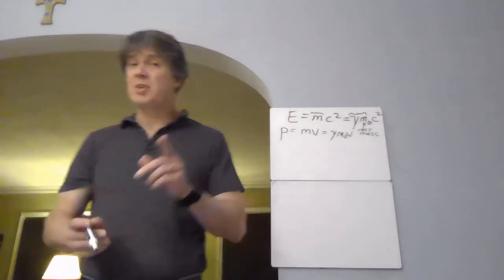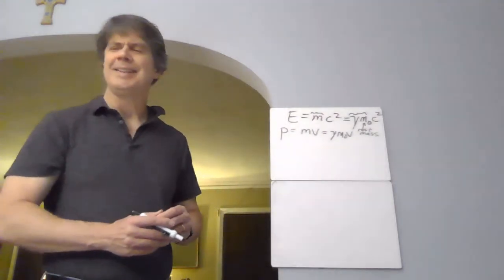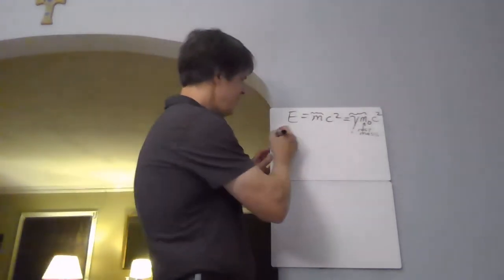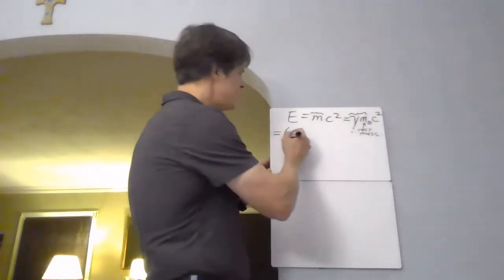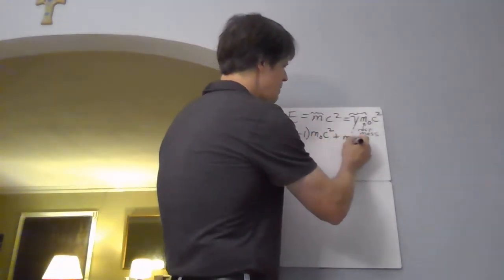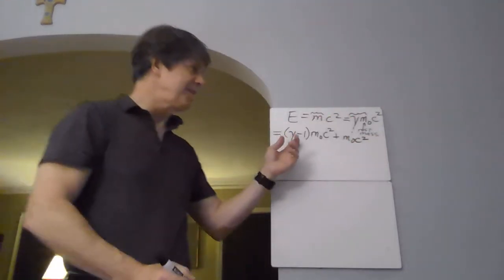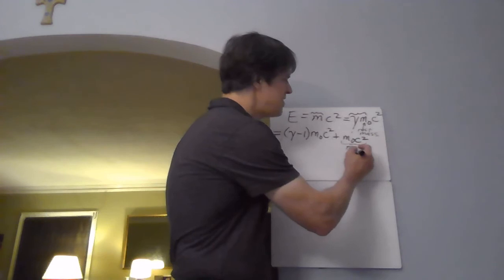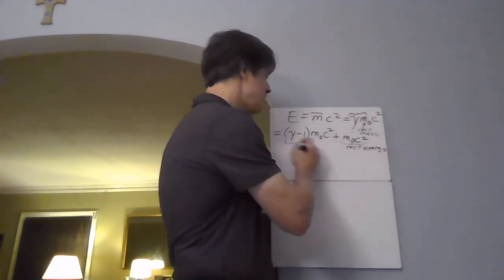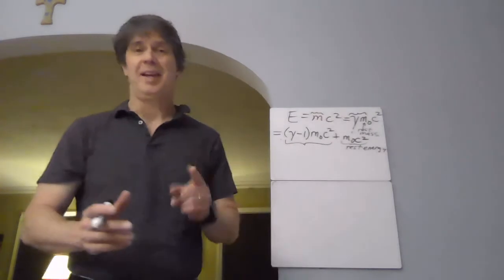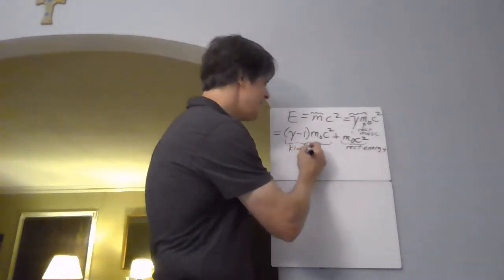When I get back to the energy thing, here's something interesting. You can write the total energy as gamma minus one times M-naught c squared, plus M-naught c squared. I've just weirdly split out a gamma minus one and a one. The reason for doing this is the M-naught c squared term can be named the rest energy. And the rest of the energy besides the rest energy? That must be the kinetic energy. This first term, gamma minus one times M-naught c squared, is kinetic energy.